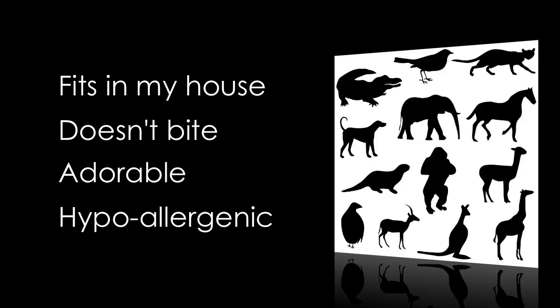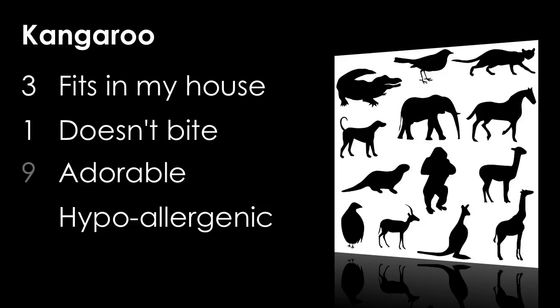With the QFD, you define those criteria, then you decide how well each of your different options meet that criteria. In order to do that, you assign a value to it — a 1, a 3, or a 9. I'll show you why it's 1, 3, and 9, and not just 1, 2, 3.